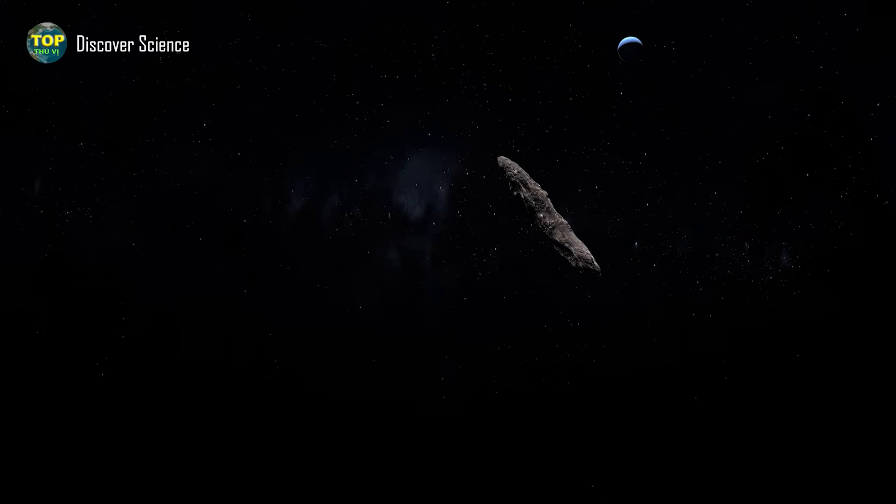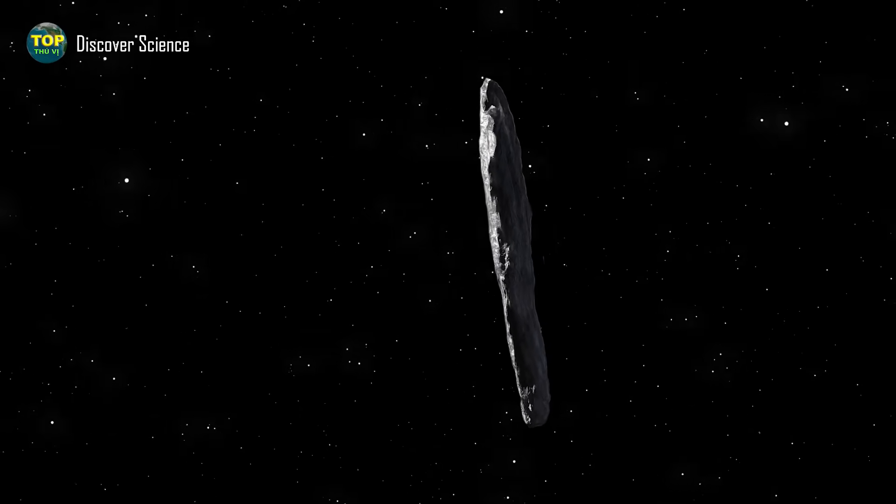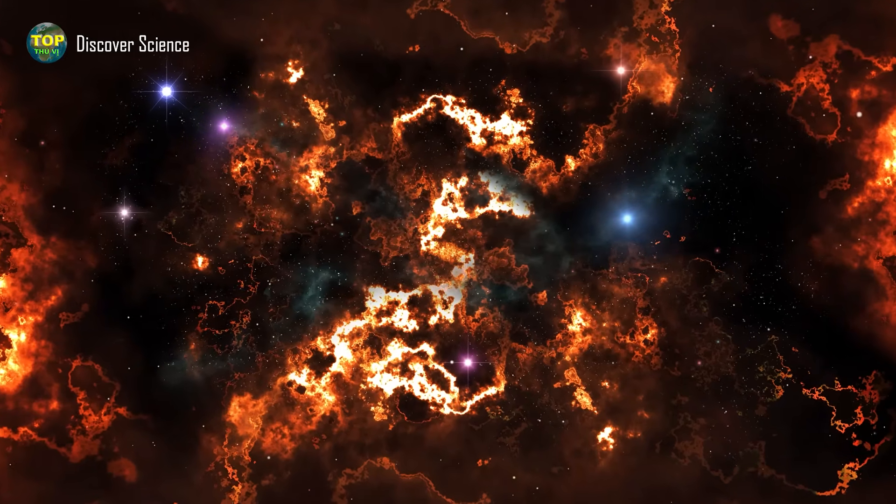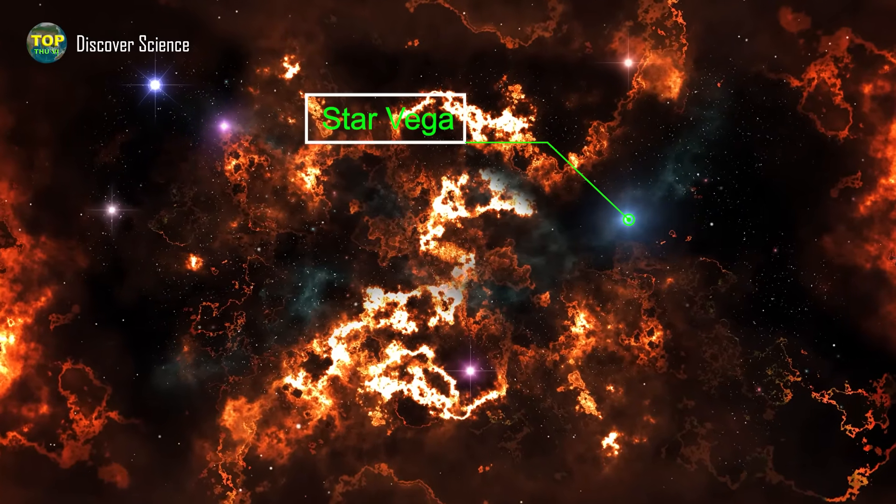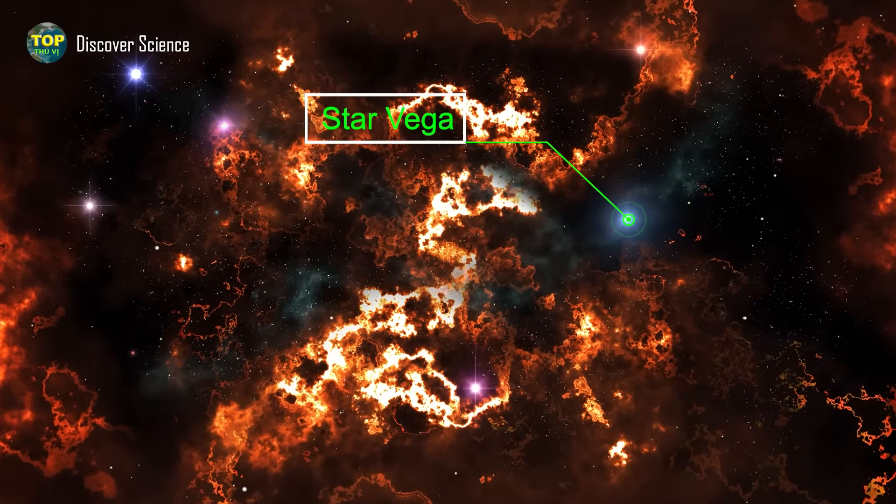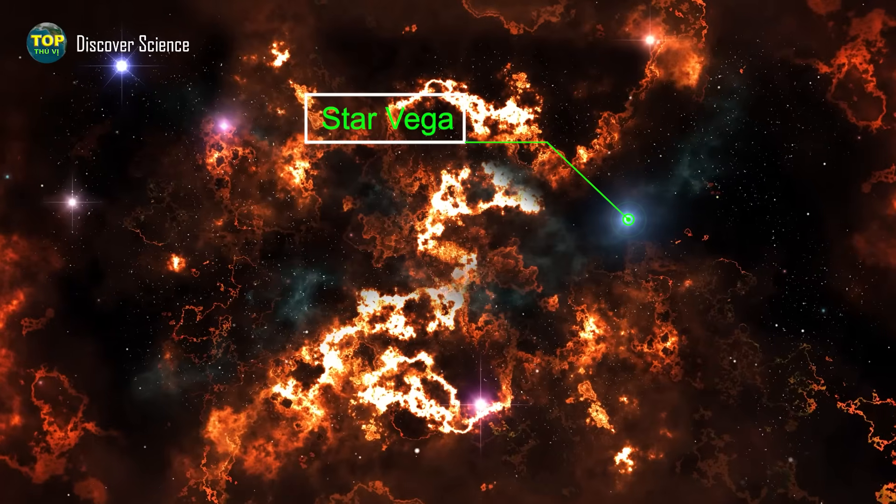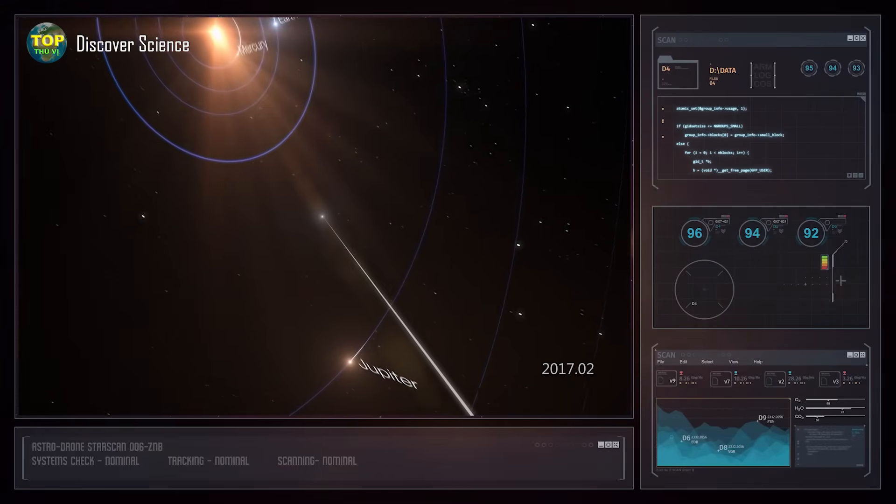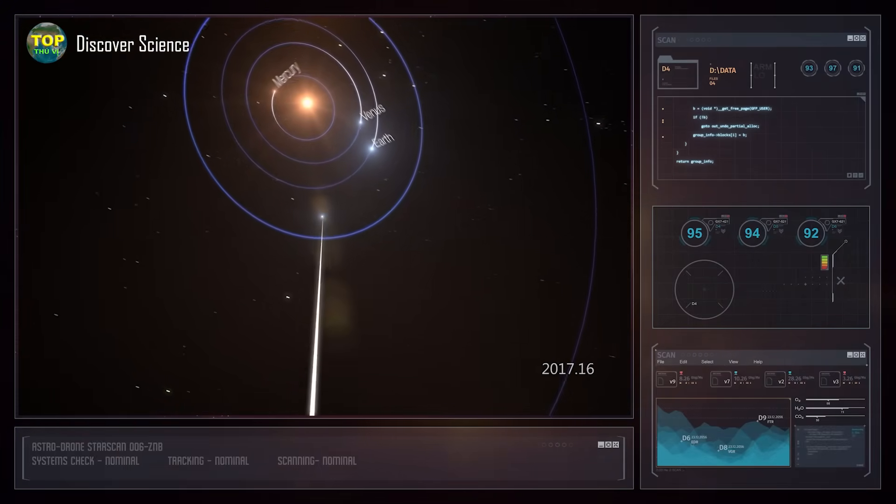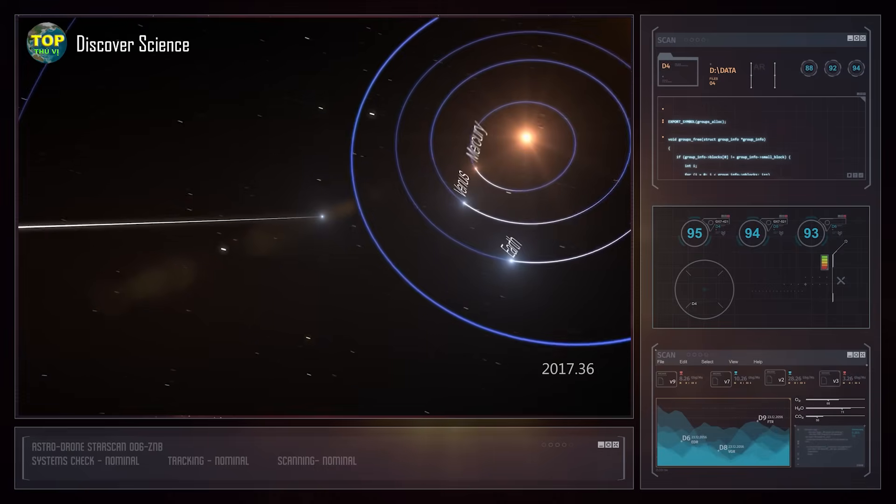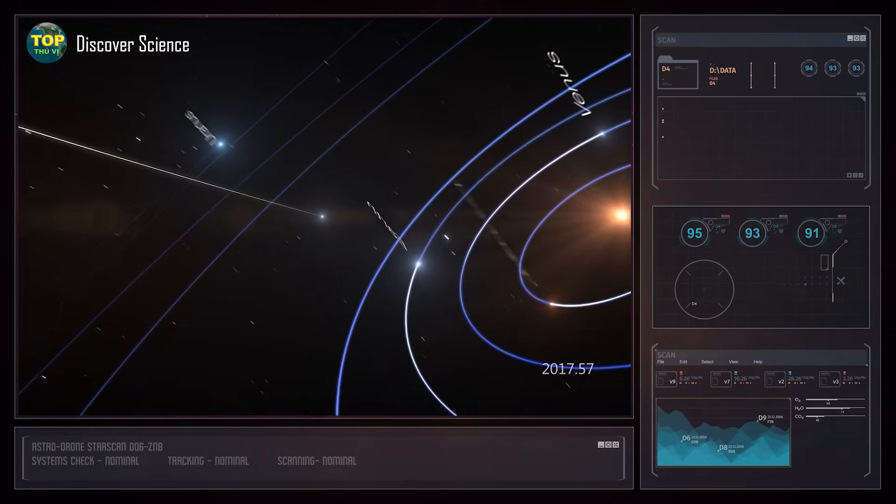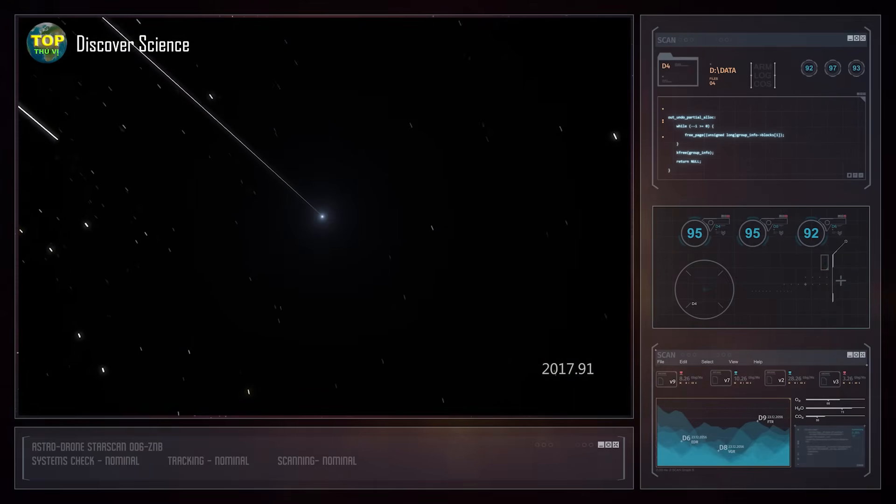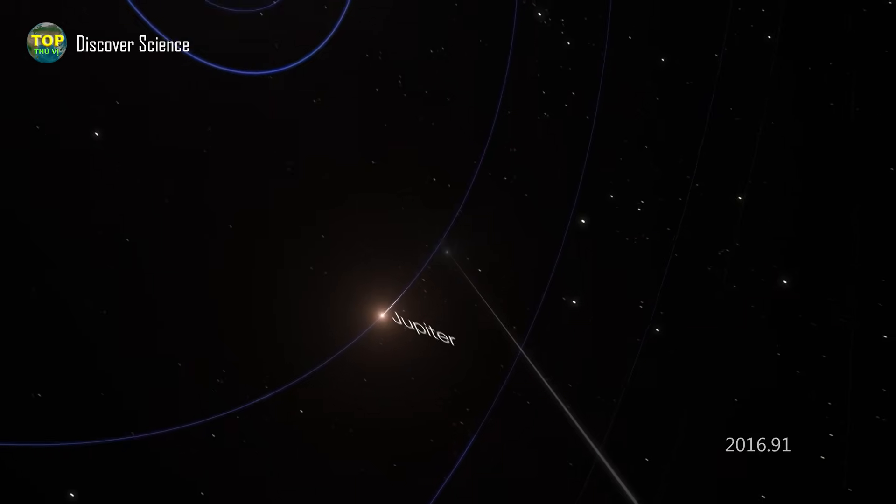The orbit is one such clue. When astronomers traced the object's orbit, they discovered that 'Oumuamua entered the solar system from the direction of the Lyra constellation, very close to the position of the star Vega, which is about 25 light-years away. However, there's an interesting detail: Vega wasn't in that position 25 years ago. If 'Oumuamua truly originated from that region, it must have started its journey hundreds of thousands of years ago. This suggests that 'Oumuamua wasn't launched from Vega but rather just happened to come from that direction—a mere coincidence in the vastness of the universe.